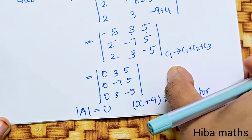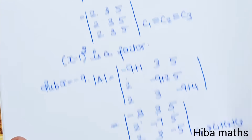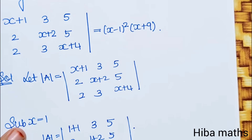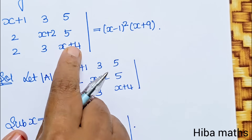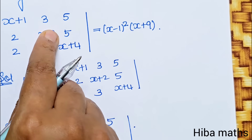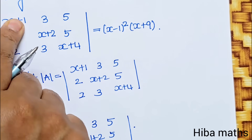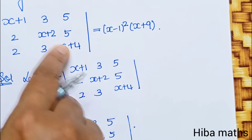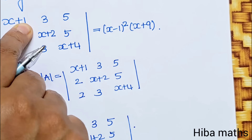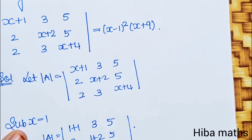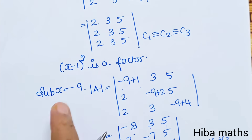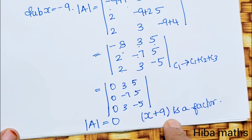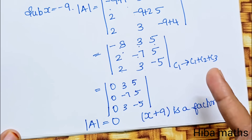Now, the degree of the leading diagonal: each diagonal entry has degree 1, so total degree is 3. The degree of the known factors (x-1)² and (x+9) is 2+1=3, which matches the diagonal degree.